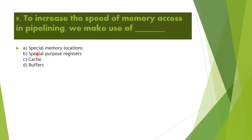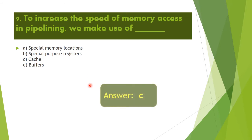Next question: To increase the speed of memory access in pipelining, we make use of — Option A: special memory locations. Option B: special purpose registers. Option C: cache. Option D: buffers. To increase the speed of memory access in pipelining, we use cache. Option C is the right answer.